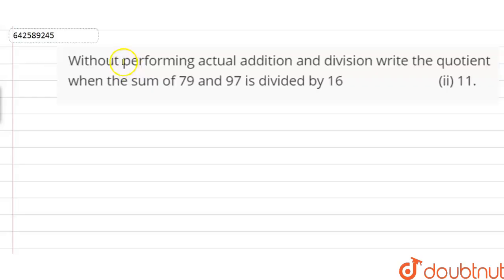Without performing actual addition and division, we have to find the quotient when the sum of 79 and 97 is divided by 16.